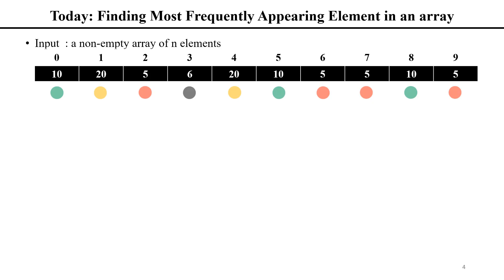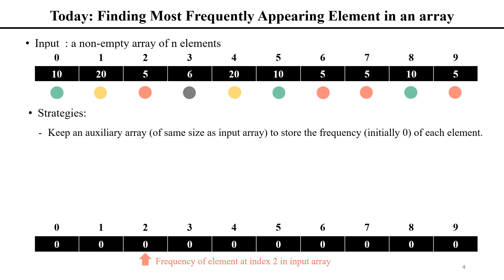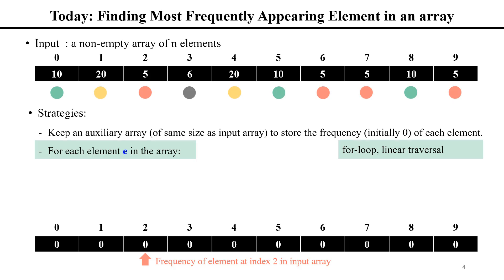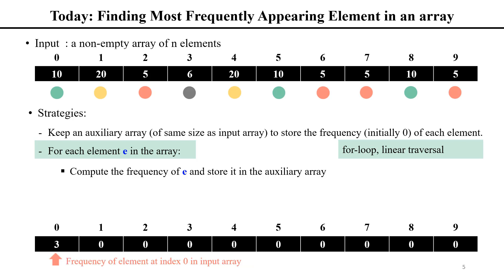Since each element in the array has a frequency, if we can find out the frequency of each element, then we can find out who has the maximum frequency using the strategy from the last problem. More specifically, we keep an auxiliary array of the same size as the input array to store the frequency of each element. For example, at index 2 in the auxiliary array, we store the frequency of the corresponding element at index 2 in the input array. Starting from index 0, we compute the frequency of element 10, which appears three times, and store 3 at index 0 in the auxiliary array.